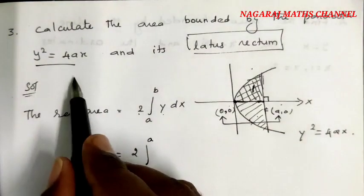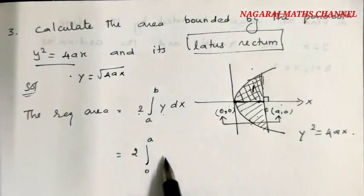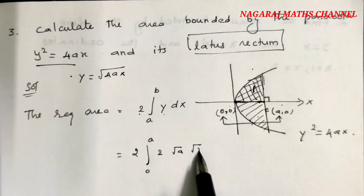We have y dx where y² = 4ax. So y = √(4ax) = 2√a · √x.